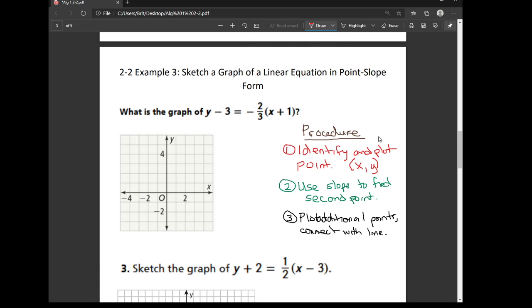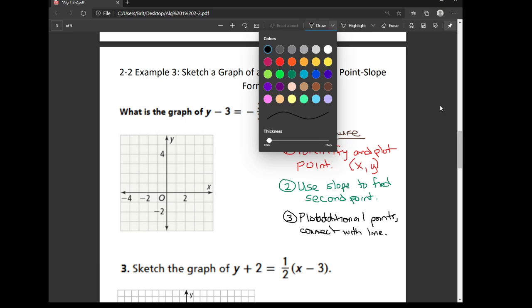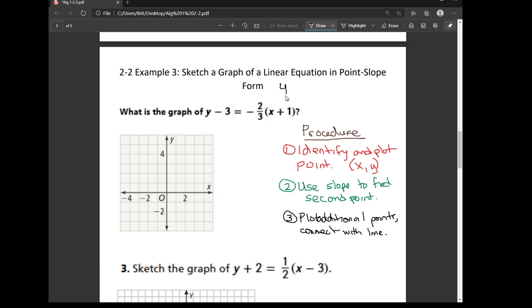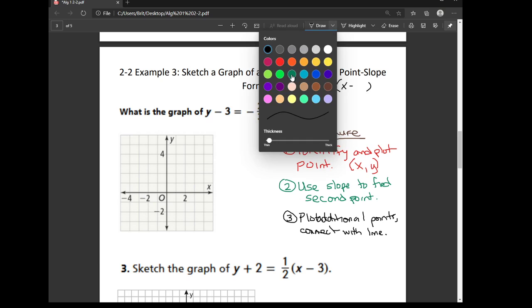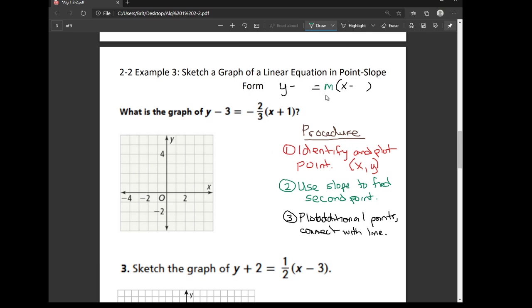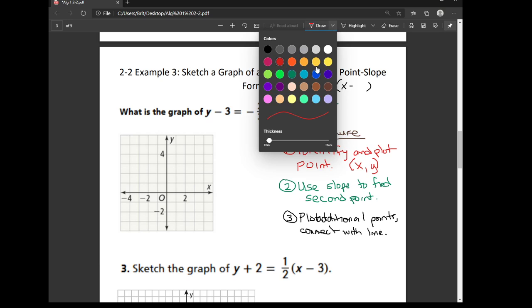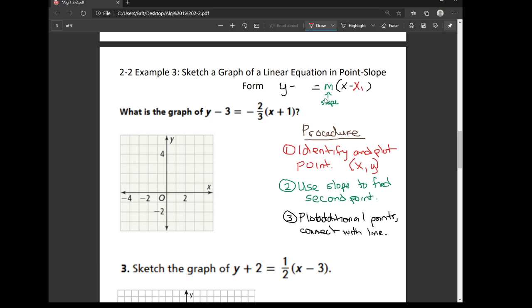Alrighty, so for this first example, we need to identify and plot the point. So just a reminder, point-slope form is usually written out in this way, where m is the slope. And then the ordered pair, x1, y1 is the point that's given to you.